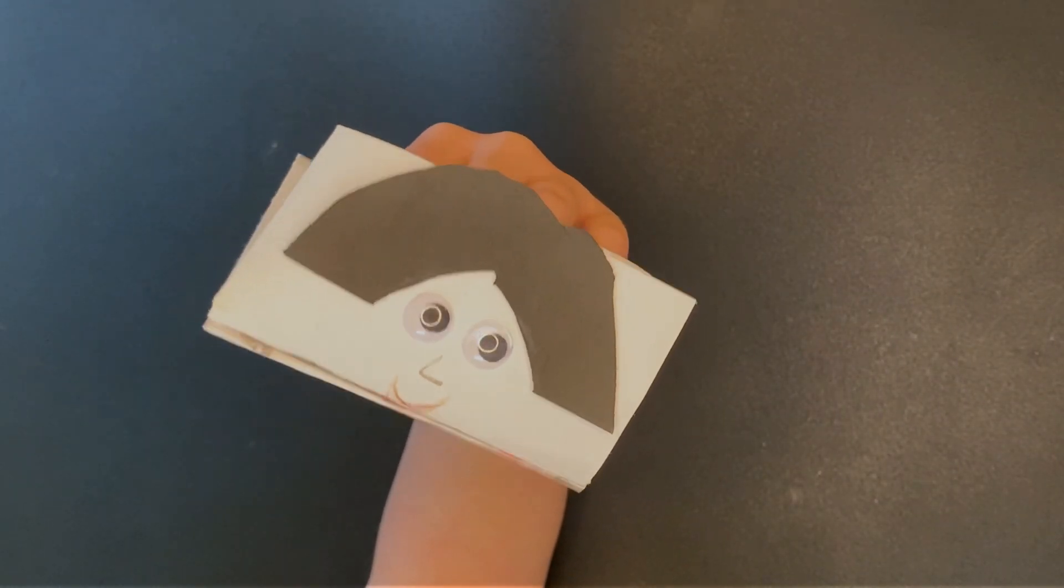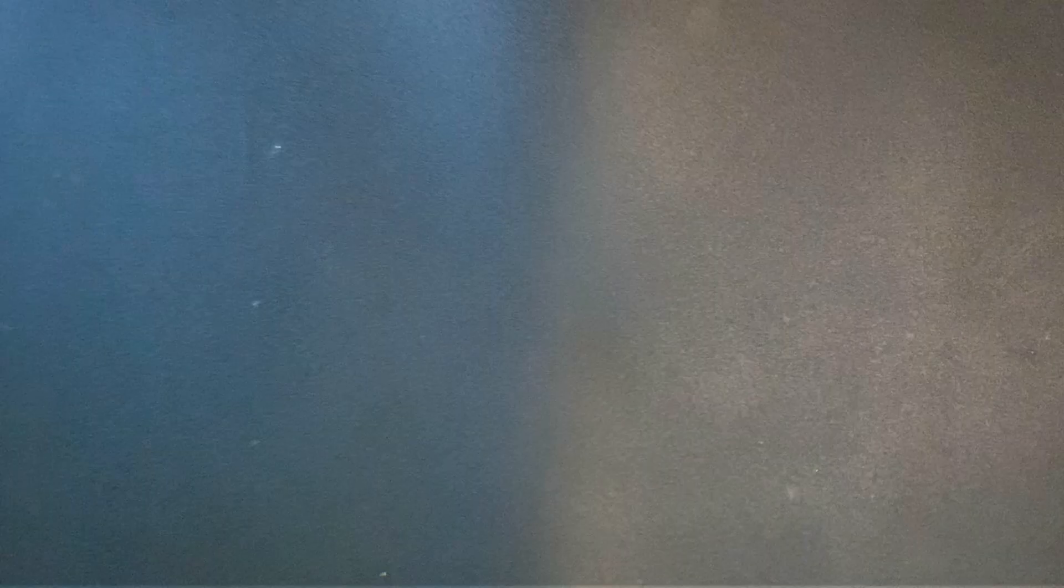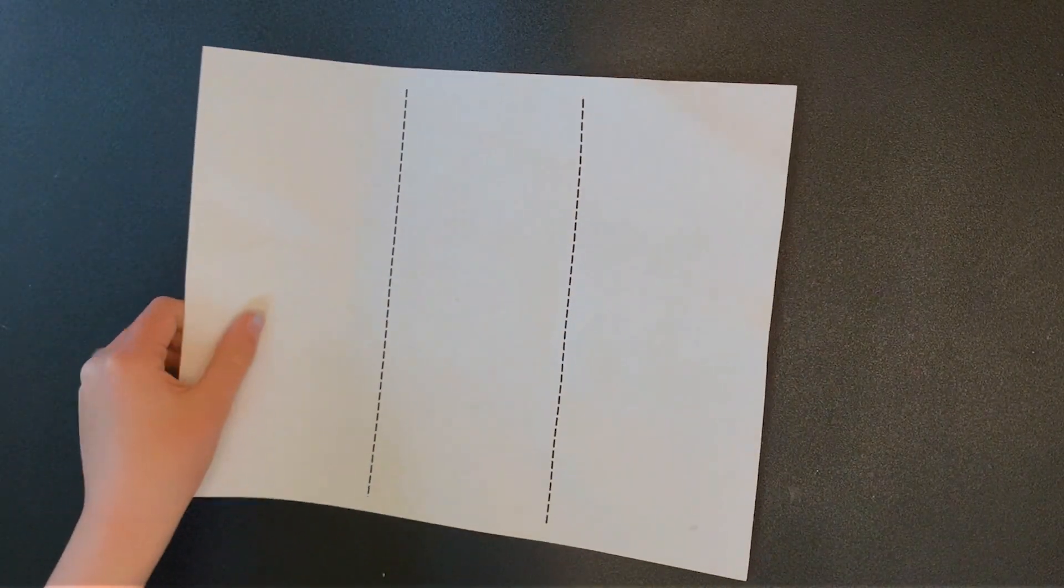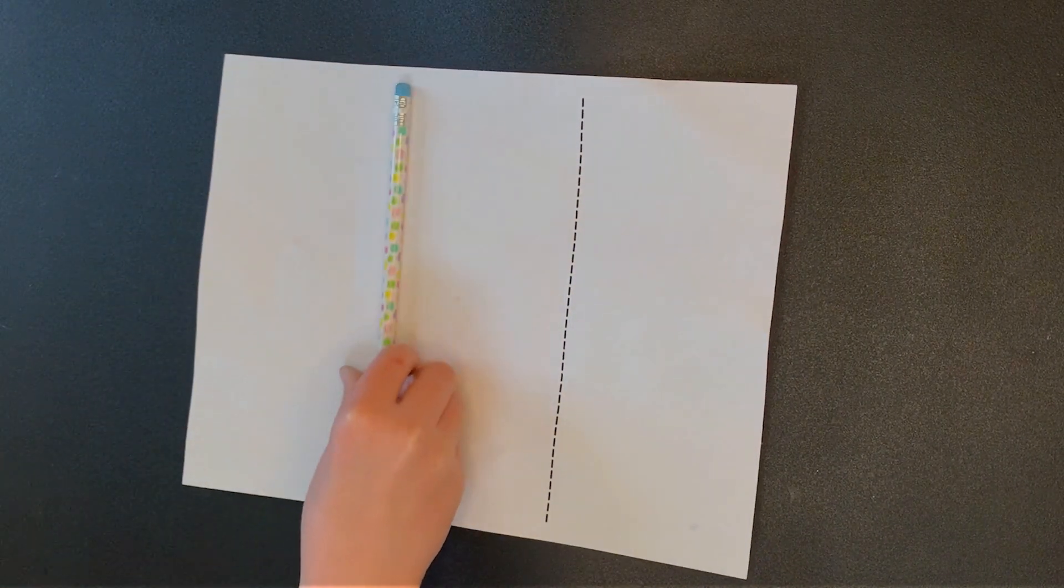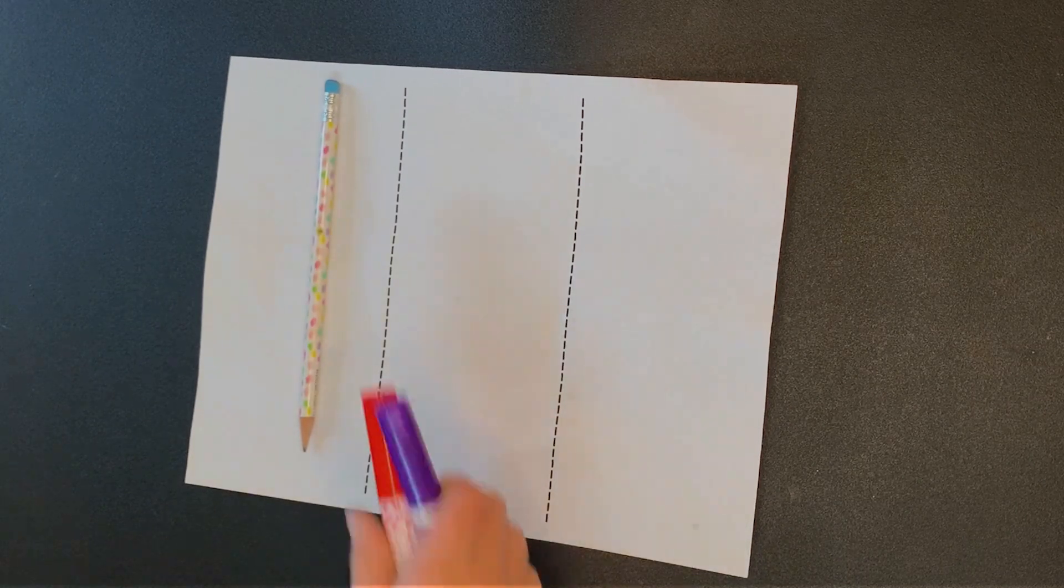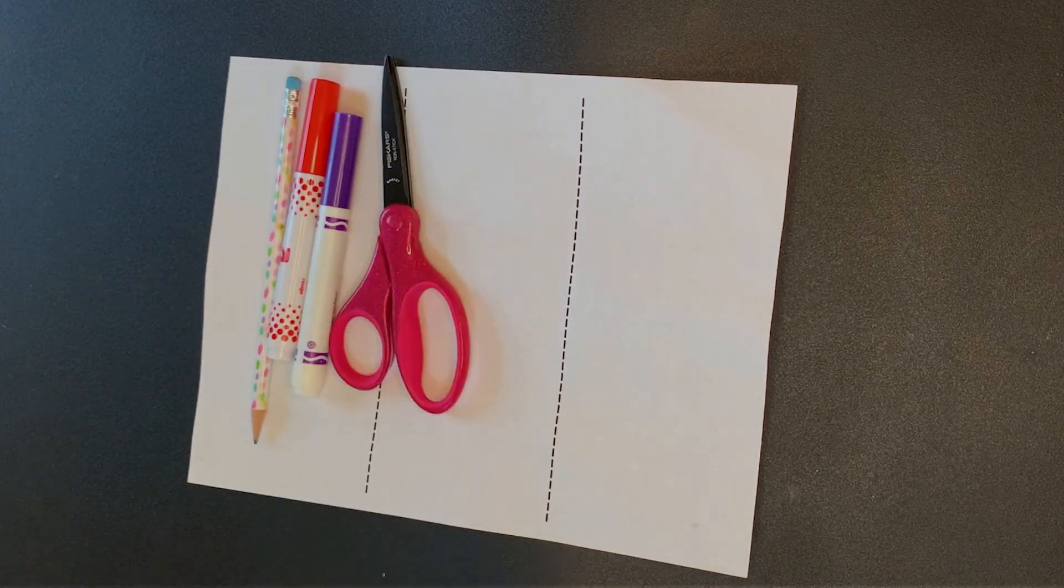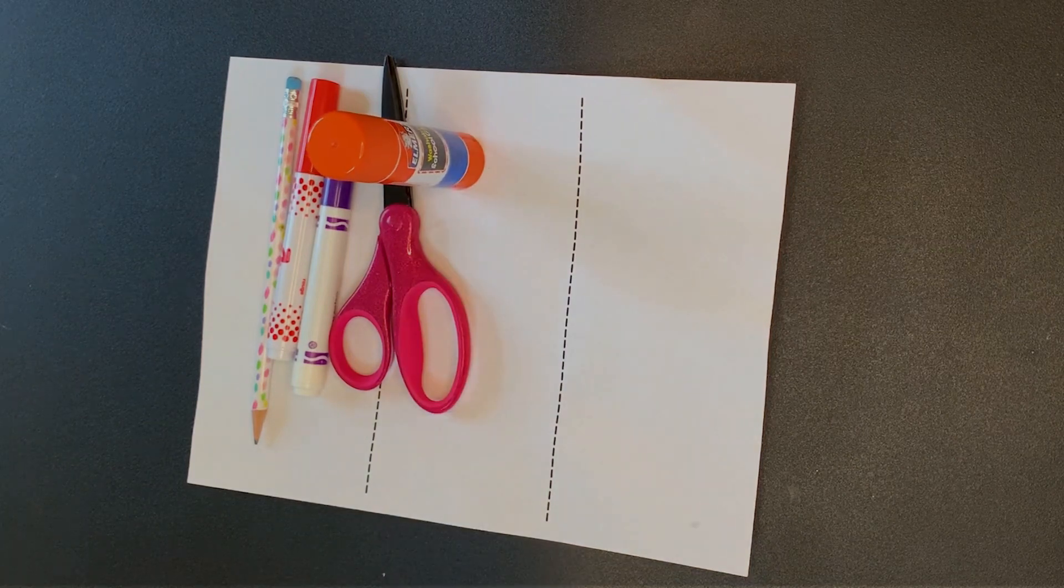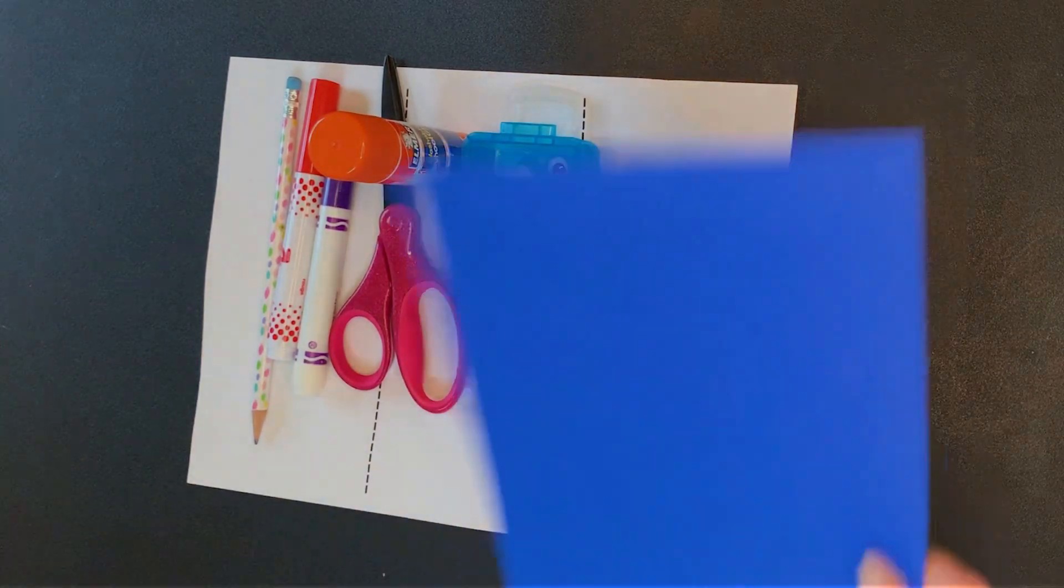Today we're going to be making Hosanna hand puppets. We'll need some paper printed with the puppet template on it, colored pencils or markers, whatever you'd like to draw with, scissors, glue or tape, and some fun bits of foam and googly eyes to really give our puppets some excitement.